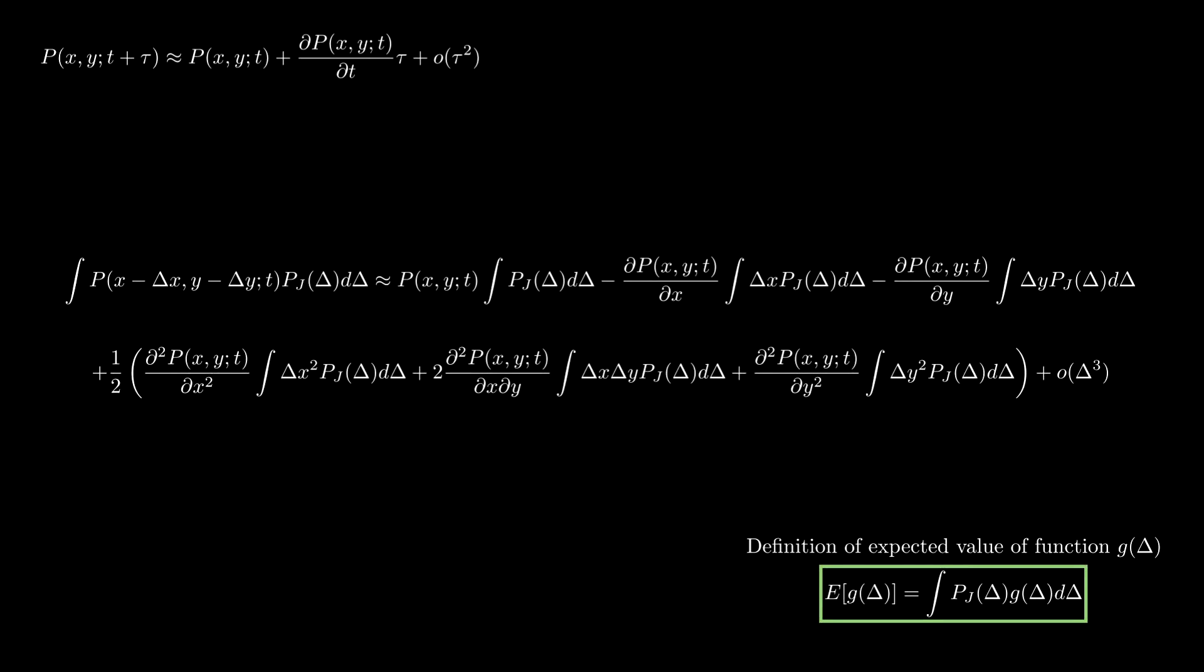Coming back to our previous expression, we can recognize some expected values that can be easily calculated. First, the expected value of the constant function 1, which is 1, due to the normalization of the probability distribution.